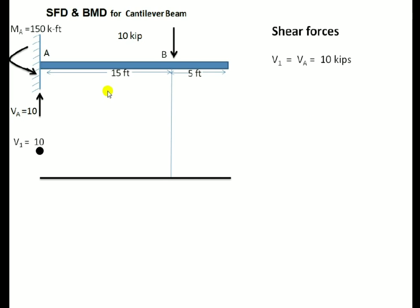Now I will draw the SFD diagram. V1 is equal to VA. Since VA is upward, V1 is positive. V2 is equal to VA because there is no load acting between A and B, so the shear force between A and B will be the same, which is 10 kips.